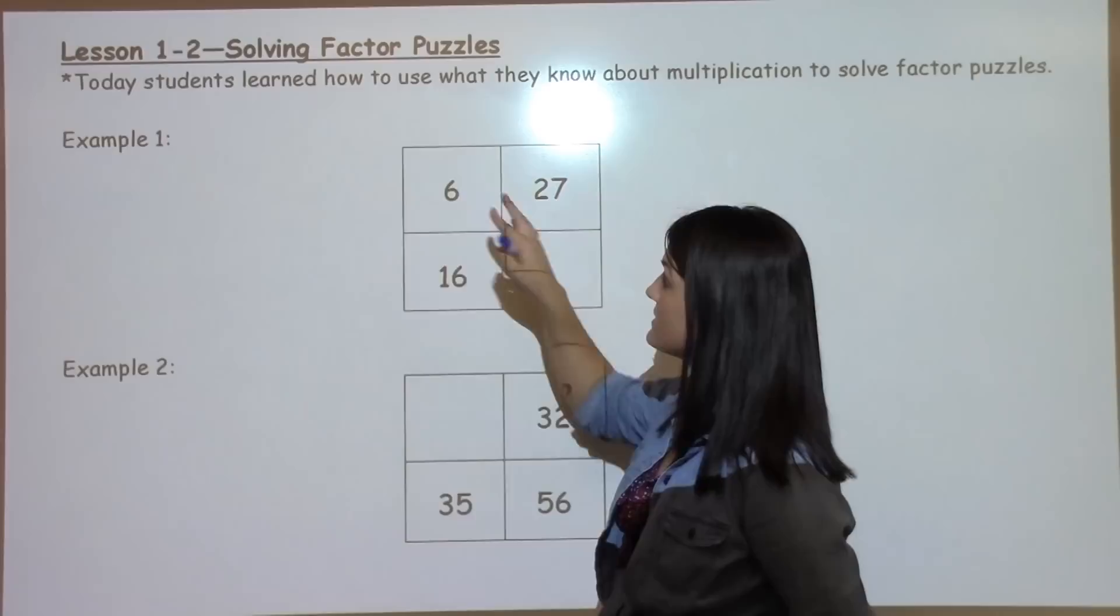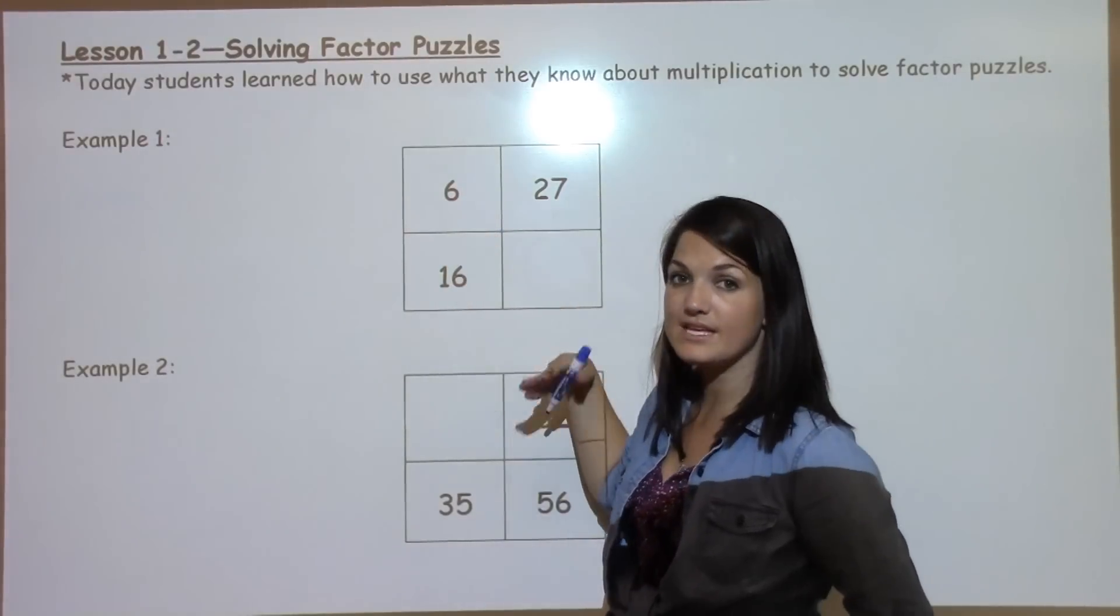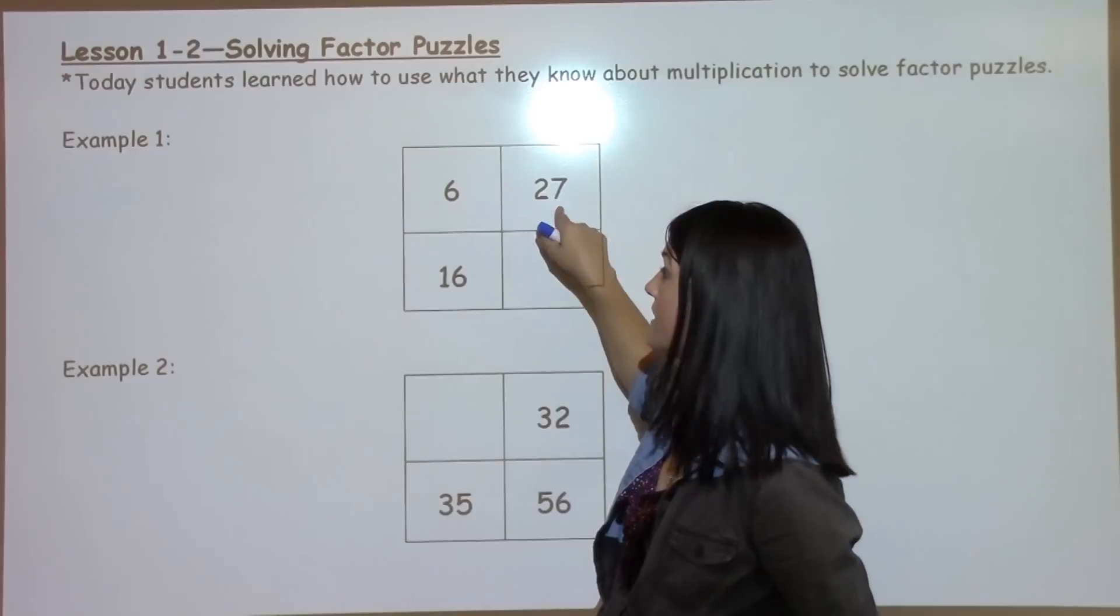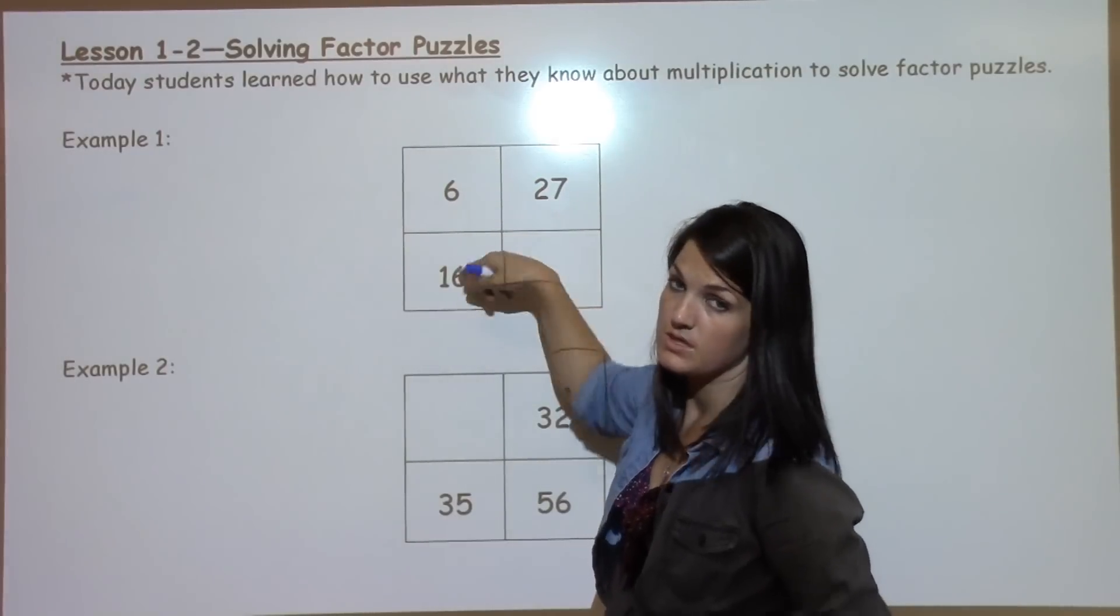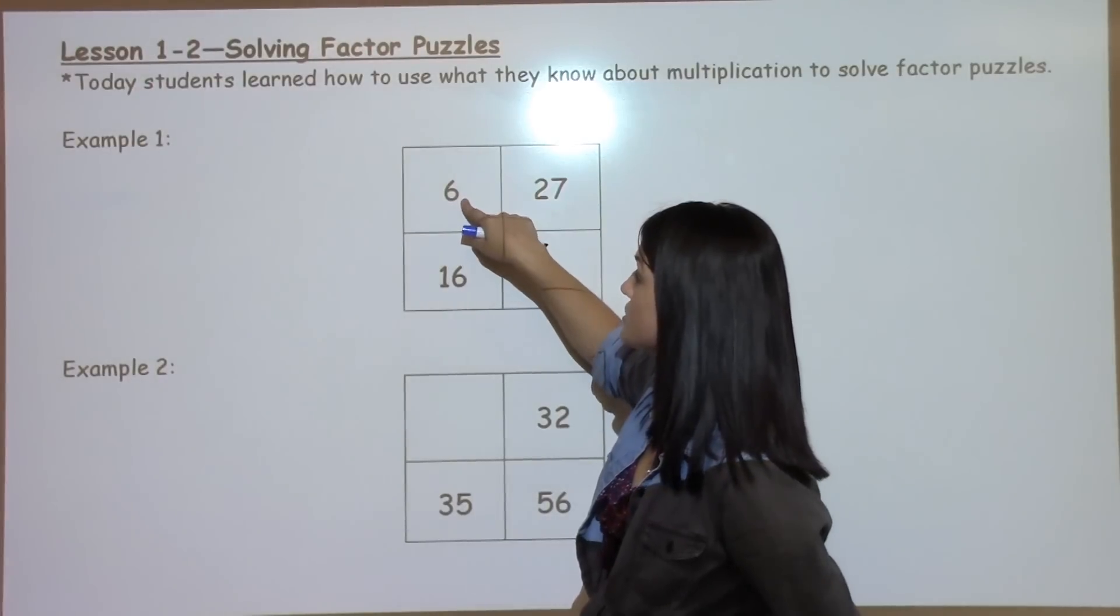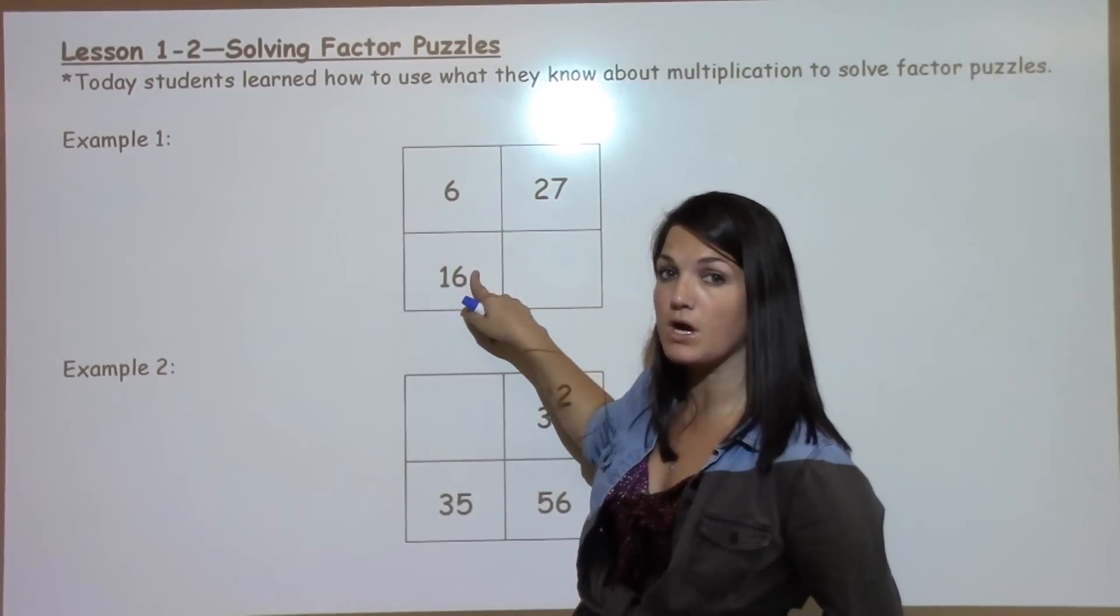So how we do that is we first need to think about what these numbers have in common. You can go across and find out what those numbers have in common or you can go down. Either way, whichever one's easier for you. For me, I think I'm going to start with 6 and 16 because they're smaller numbers.